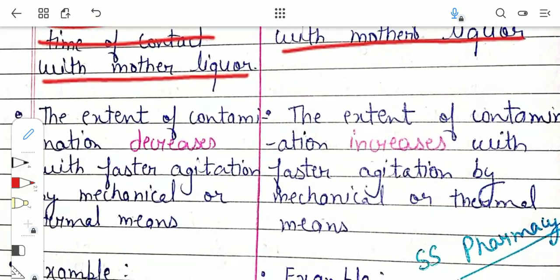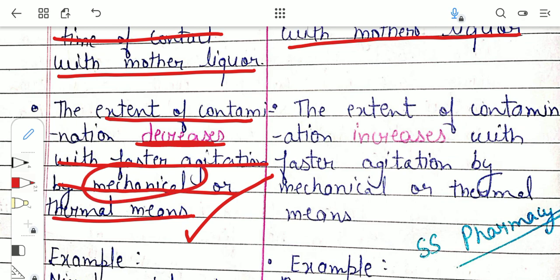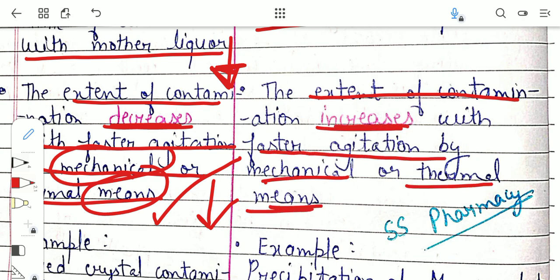The next difference: in co-precipitation, the extent of contamination decreases with faster agitation by mechanical or thermal means. Agitation removes impurities absorbed on the surface of the precipitate. In contrast, in post-precipitation, the extent of contamination actually increases with faster agitation by mechanical or thermal means.